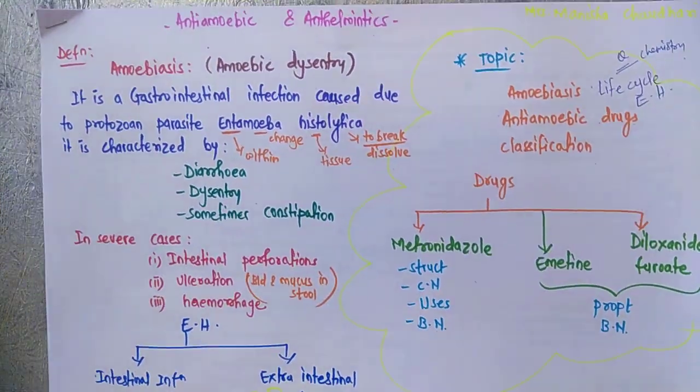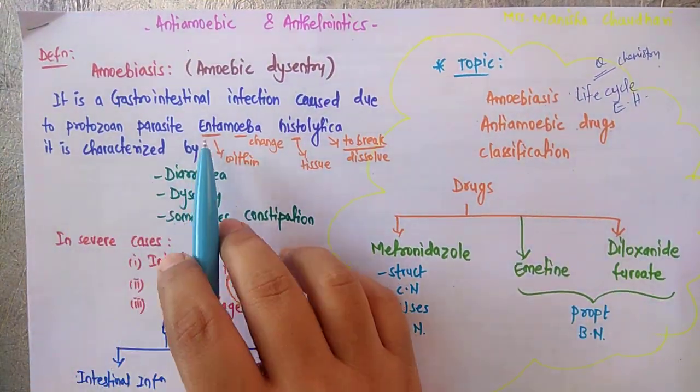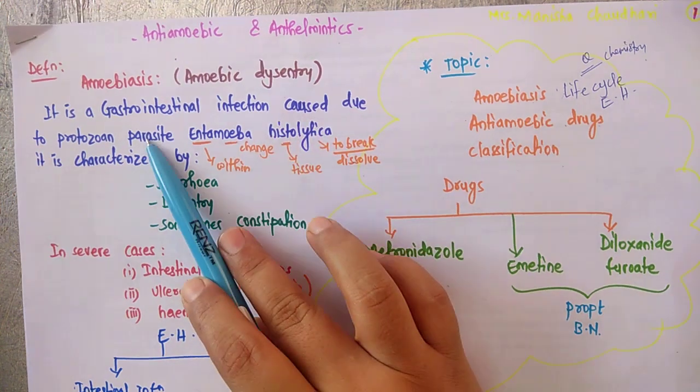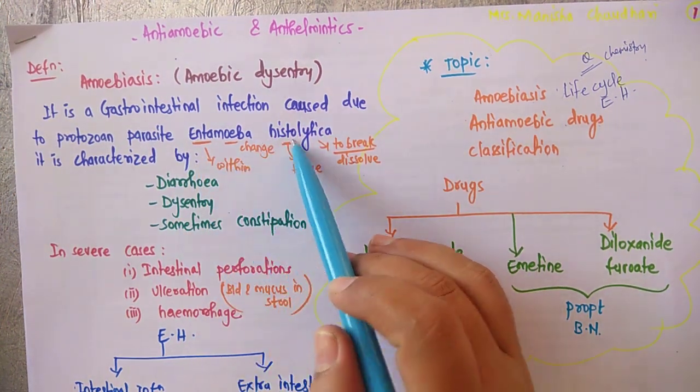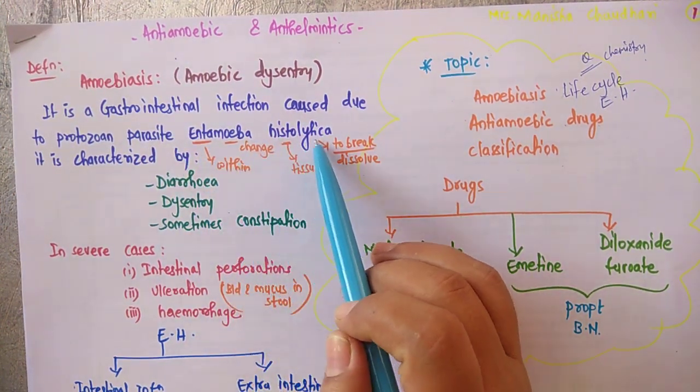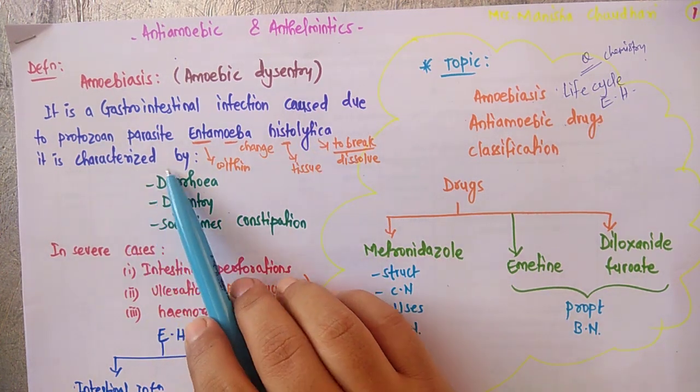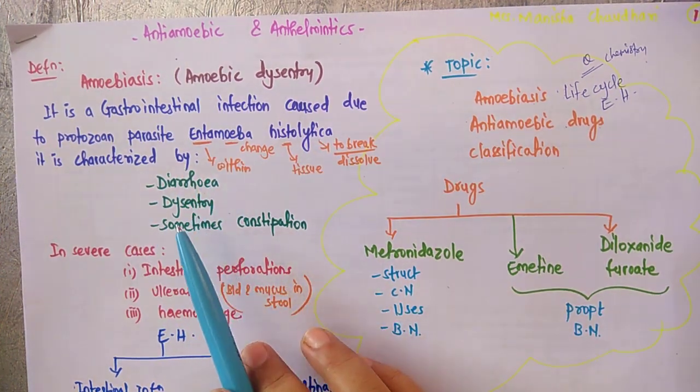Amoebiasis, if you recall from our previous video lecture, is also called amoebic dysentery. It is a gastrointestinal infection caused due to a protozoan parasite, Entamoeba histolytica, which is characterized by diarrhea, dysentery, and sometimes constipation.